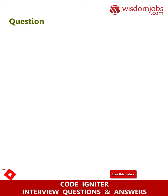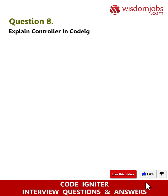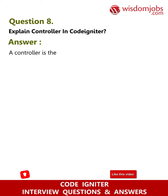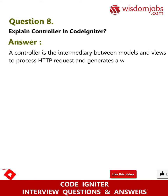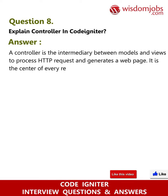Question 8: Explain controller in CodeIgniter. Answer: A controller is the intermediary between models and views. It processes HTTP requests and generates a web page. It is the center of every request on your web application.